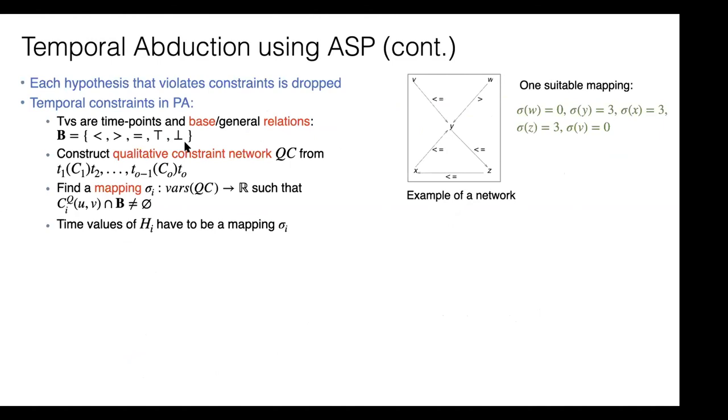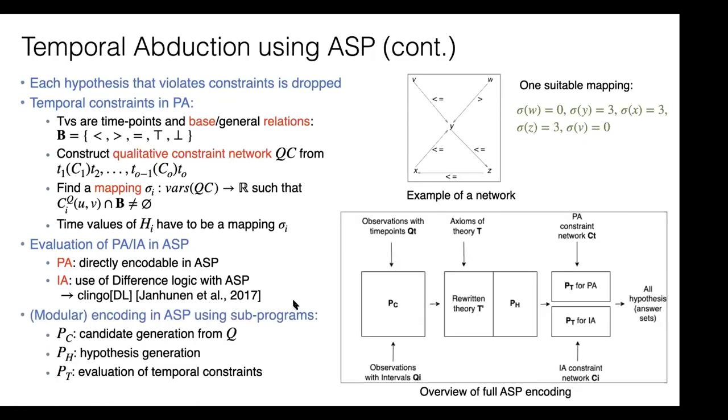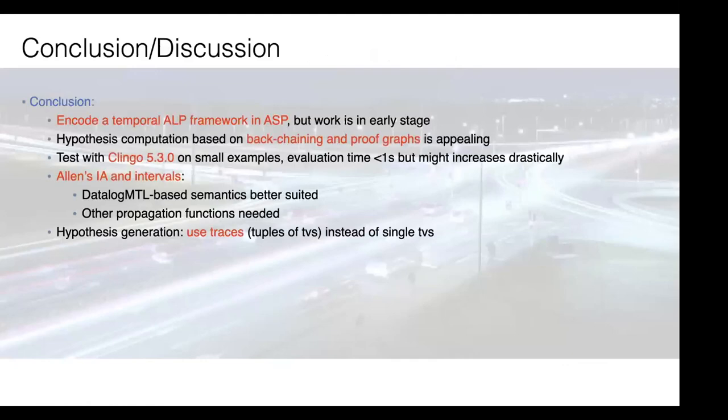Each hypothesis has to be evaluated against temporal constraints. For this we use qualitative constraint networks. In qualitative constraints we can find mappings to variables which fulfill the constraints. Our hypothesis has to be a mapping in this qualitative constraint network. We've evaluated in point algebra and interval algebra. Interval algebra is more challenging - we use difference logic and designed a modular encoding in ASP with three sub-programs so we can change parts depending on the time model and algebra.